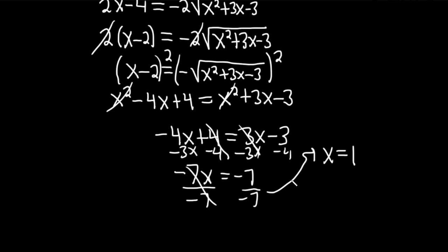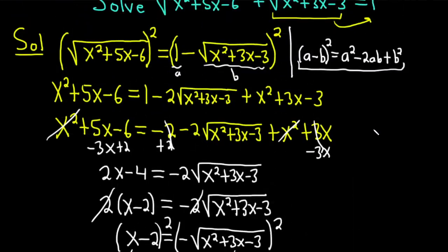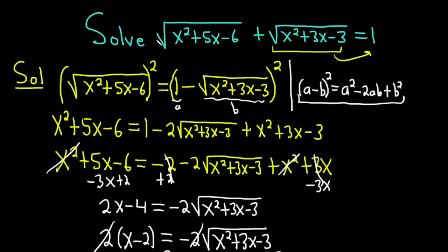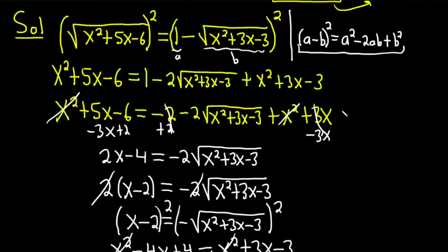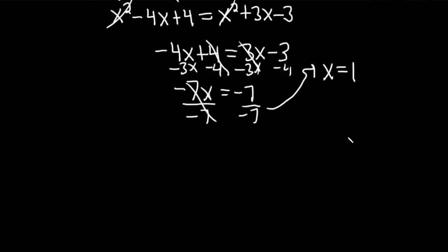However, we're not done. Whenever you have equations with square roots, you should always check your answers — sometimes you'll get an answer that won't check, which is called an extraneous solution. When we check, we have to go all the way back and plug it into the original equation.